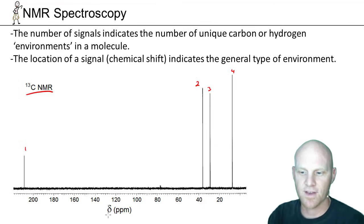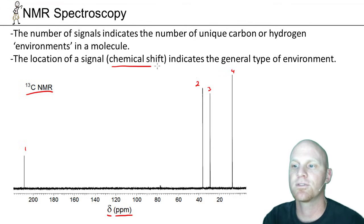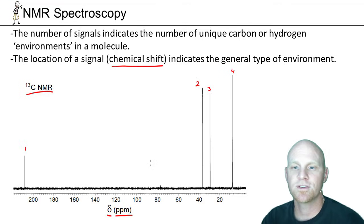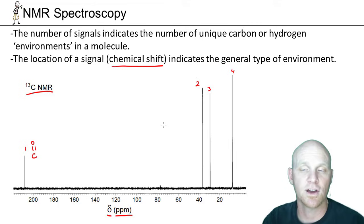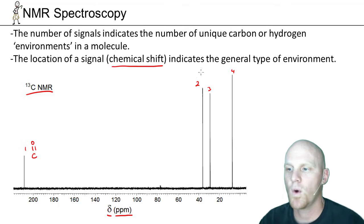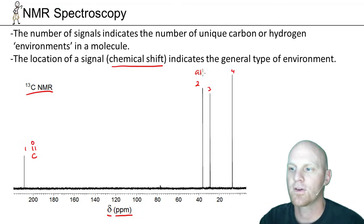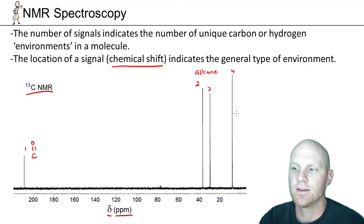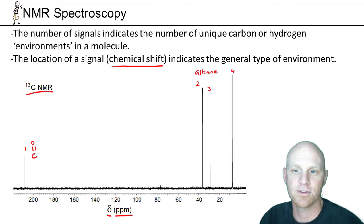Where the signals show up is also important. The x-axis uses the symbol delta, measured in parts per million, and we call that the chemical shift. Based on where a signal appears, it tells us something about that carbon. For example, a signal upwards of 200 is definitely a carbon double-bonded to an oxygen — a carbonyl carbon — whereas signals way down at the other end of the spectrum are going to be in the alkane range. Where these signals show up can tell us what kind of environment those carbons are in.